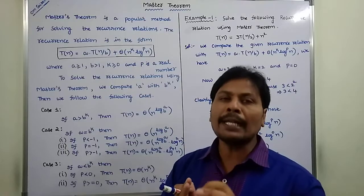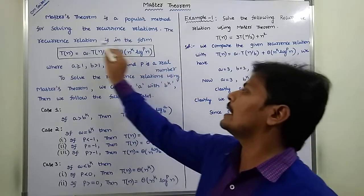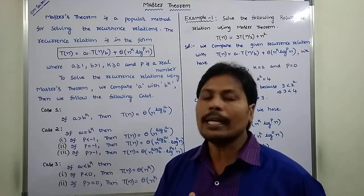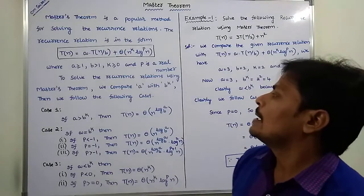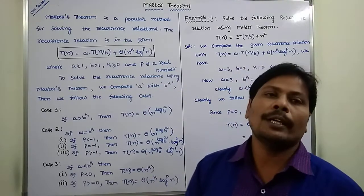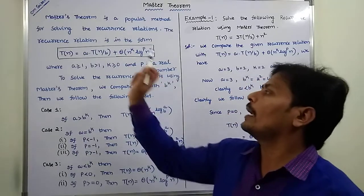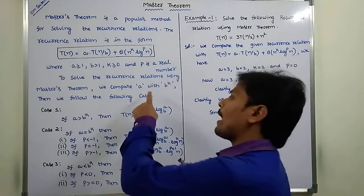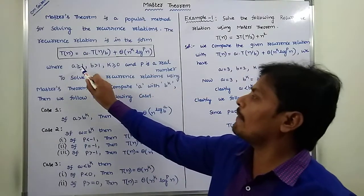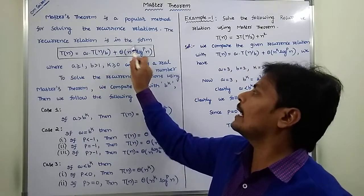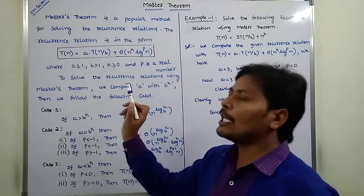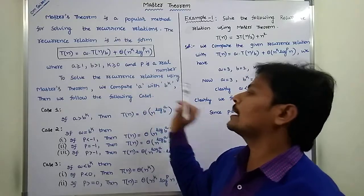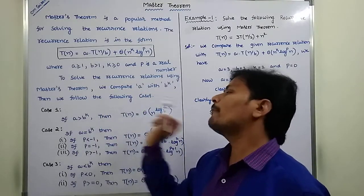If the given recurrence relation is in this standard form, then we find the time complexity using Master Theorem. To solve that recurrence relation, we compare the A value with B^k. Here, A value, B value, and k value are identified from the recurrence relation, and then A is compared with B^k to determine which case to follow.